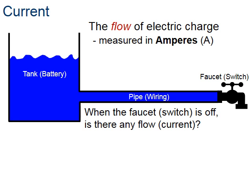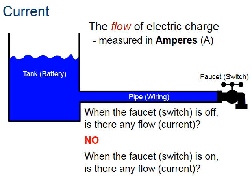Let's take a look at this system. If we have the switch — in this case, a faucet — if it's turned off, the question is: is there anything flowing? And the answer, of course, is no. And if we turn it on, then we have flow and we have current. The same thing can be said for electricity.